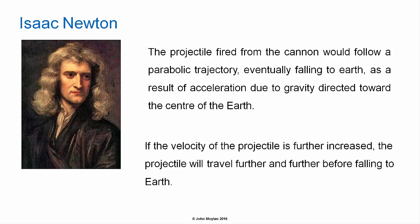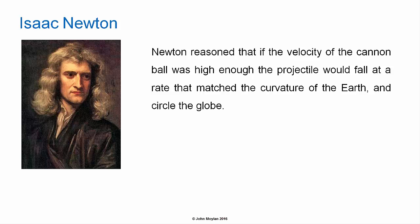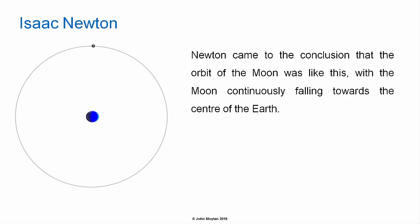If the velocity of the projectile is increased, the projectile will travel further and further before falling back to the earth. Newton reasoned that if the velocity of the cannonball was high enough, the projectile would fall at a rate that matched the curvature of the earth, and would therefore circle the globe. Newton realized this as a result of contemplating the orbit of the moon.